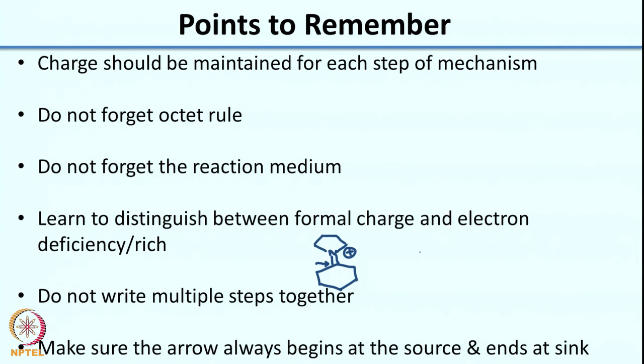Another example: if you have a protonated OH, the electron-deficient center is the carbon next to the protonated OH — you have to be very careful about this. When you think of electron sinks, it need not mean a charged species. Also, do not write multiple steps together, as that leads to a greater chance of mistakes — be very systematic and write each step independently. The basic rule is always make sure the arrow begins at the source and ends at the sink.